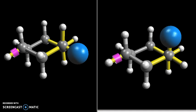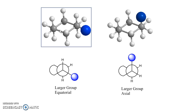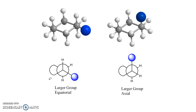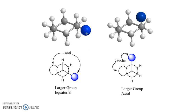On the other hand, if we look at our model where the larger substituent is equatorial, the larger substituent is anti to the rest of the ring coming off the back carbon. We can visualize this using Newman projection diagrams where the rest of the ring is represented as a curved line. In the equatorial model the larger group and the rest of the ring are anti to one another, which makes the equatorial position lower in energy and thus the favorable conformation.